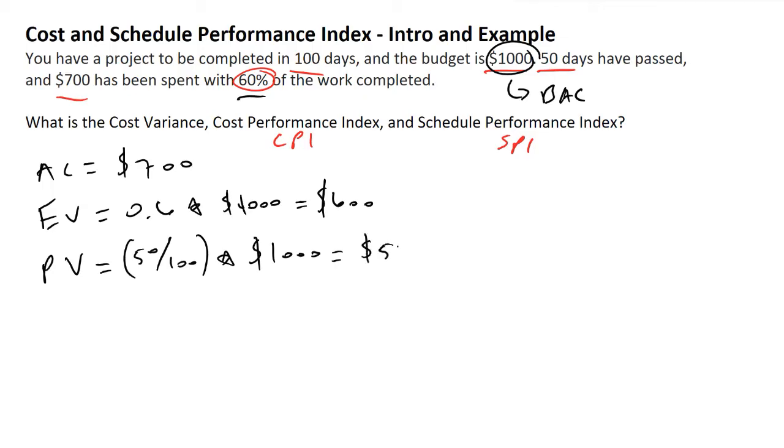This tells us that according to our schedule, if we assumed a linear schedule in this project, we should have created at least $500 in value for this project.